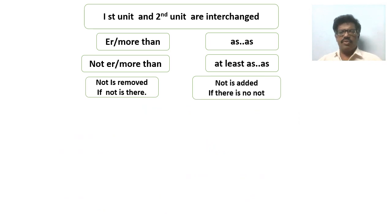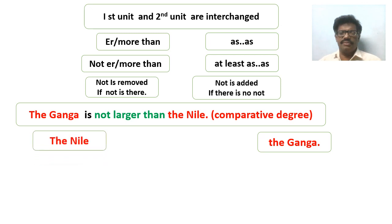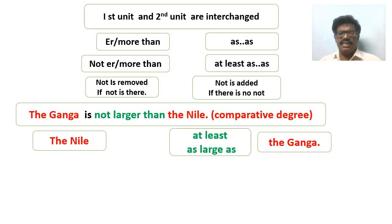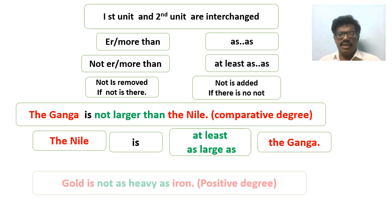Now let us take one more example. 'The Ganga is not larger than the Nile' — it is in comparative degree, we have to change it into positive degree. As per the rules, first interchange the units: the Ganga is brought here, the Nile is brought here. In the question 'than' is there with 'not', so we write 'at least as...as' — 'at least as large as' is written. In the question there is 'not', so we remove it. The answer is: 'The Nile is at least as large as the Ganga'. Whenever 'not' and 'than' are together, we write 'at least as...as'.